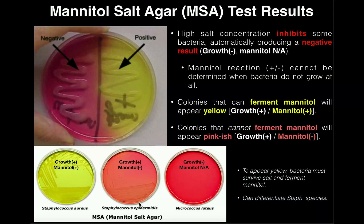Always check for growth first. If there's growth, we can then ask whether or not the bacteria ferment mannitol. Colonies that can ferment mannitol will appear yellow, so we classify those as mannitol positive. For Staphylococcus aureus on the left, there is obvious growth, and the agar turned yellow. That's because mannitol is fermented to acid end products. The pH indicator is phenol red, and when acid end products are produced from mannitol, it lowers the pH of the medium and turns phenol red yellow. A yellow plate around the colonies means a mannitol positive organism.